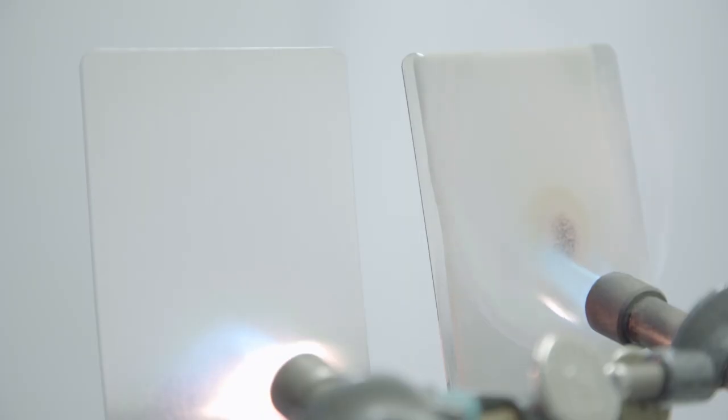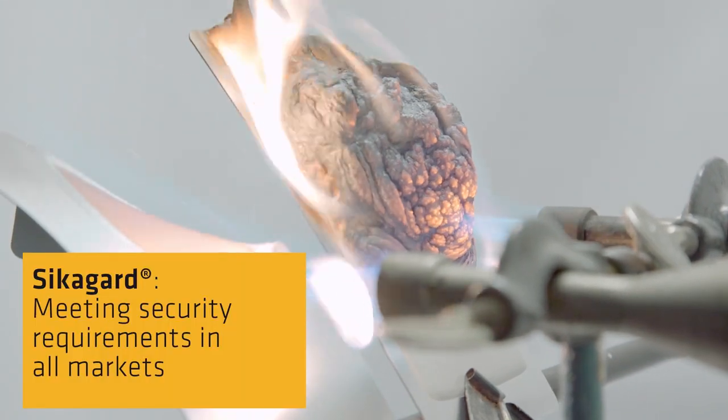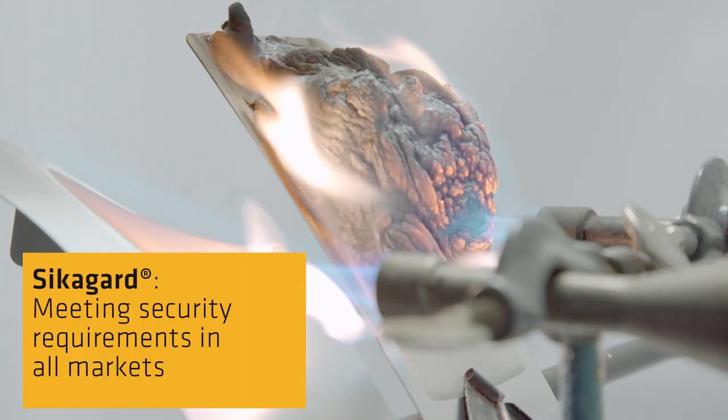By contrast, on the right-hand plate, treated with Sika Guard, an insulating protective layer is formed. It holds the heat off for up to 30 minutes.